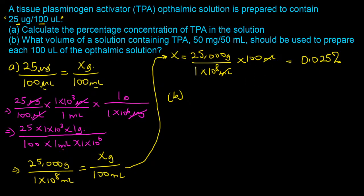For Part B, we have a stock solution with a concentration of 50 milligrams in 50 mL, and we want to find out how much volume from it we need to prepare the 100 microliter solution, noting that each 100 microliters must contain 25 micrograms. To make the math easier, we will convert everything into units of micrograms and microliters.